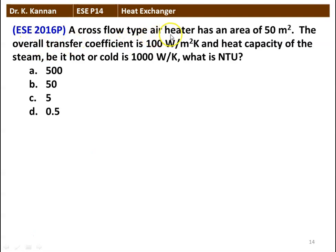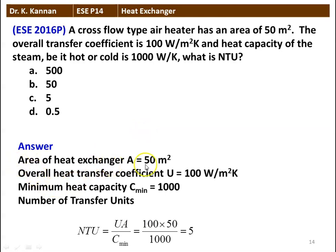Next question: a cross flow type air heater has an area of 50 m². The overall heat transfer coefficient is 100 W/m²·K, and the heat capacity of steam (whether hot or cold fluid) is 1000 W/K. What is the NTU? Options: 500, 5, 5.5, or 0.5. NTU = UA / C_minimum = 100 × 50 / 1000 = 5. The NTU is 5.